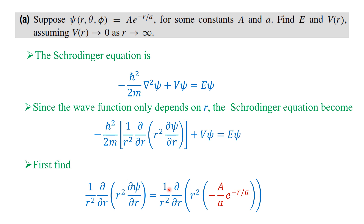This becomes (1/r²)(∂/∂r) of r² times the derivative of the wave function A·e^(-r/a). If you differentiate A·e^(-r/a) with respect to r, you get A·e^(-r/a) times (-1/a), so the derivative of the wave function becomes -A/a · e^(-r/a).